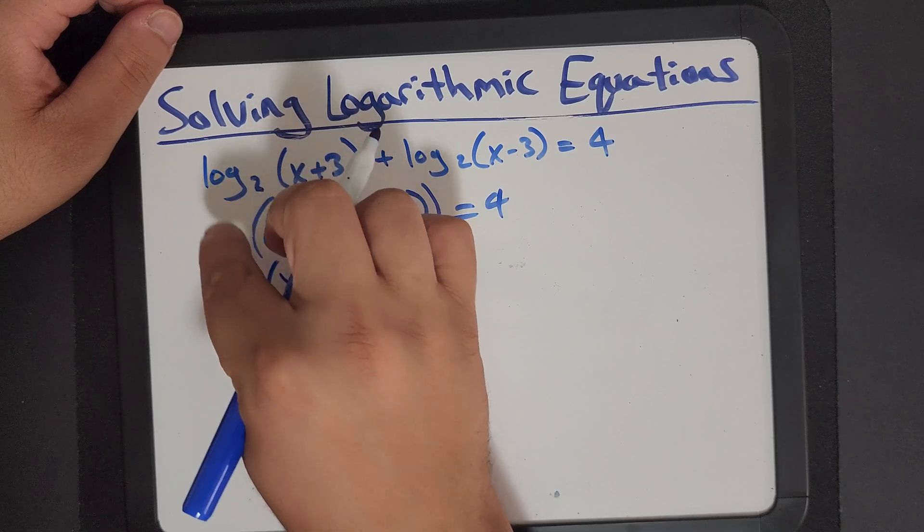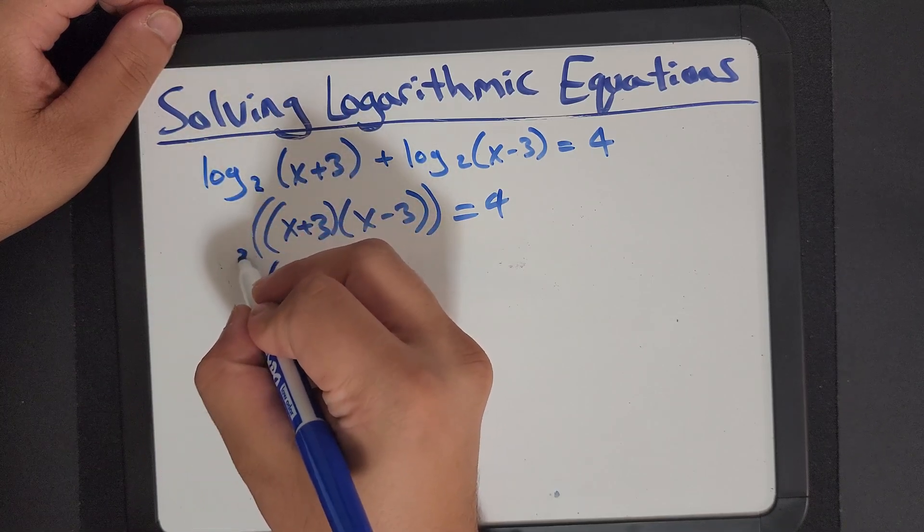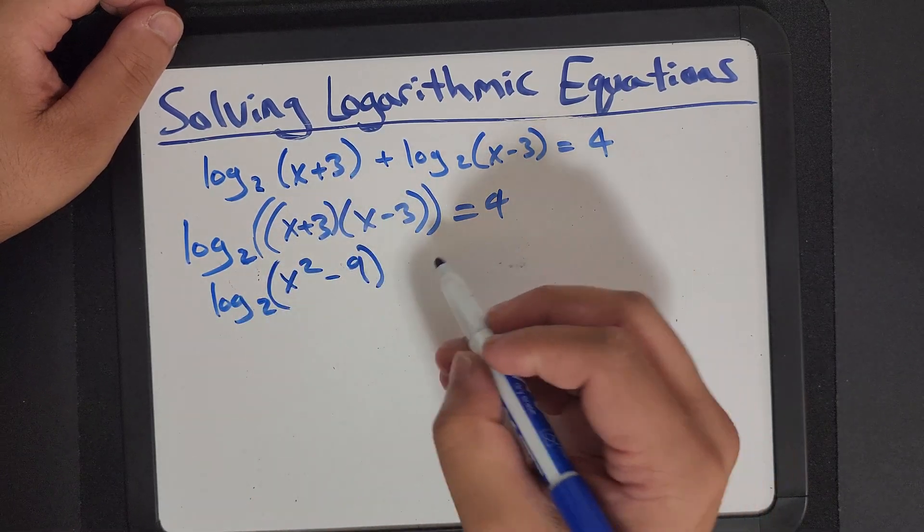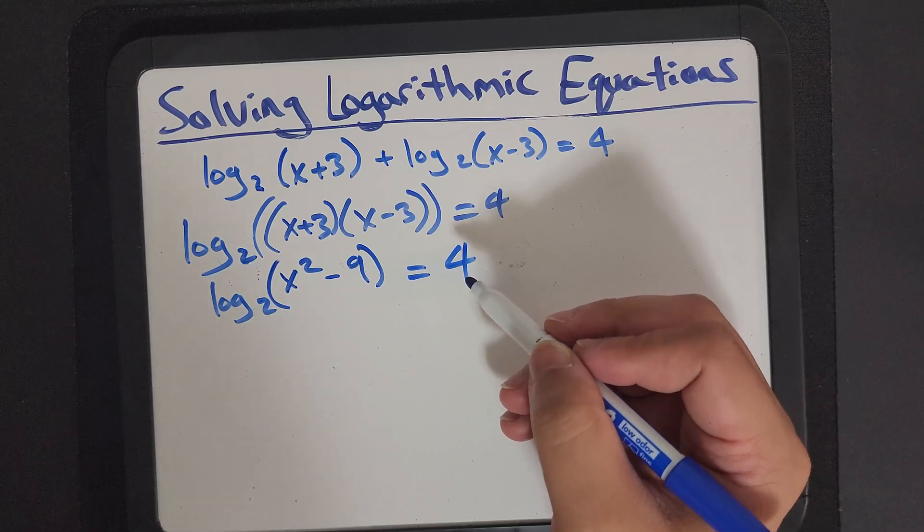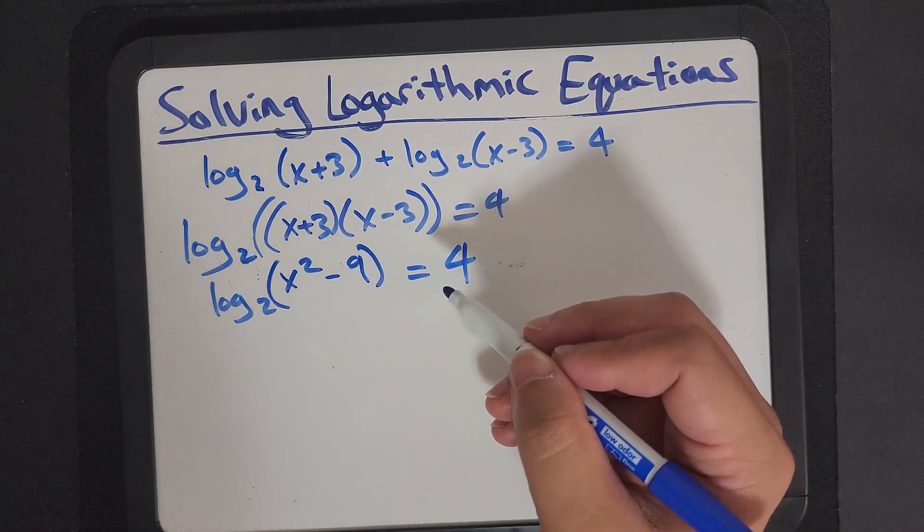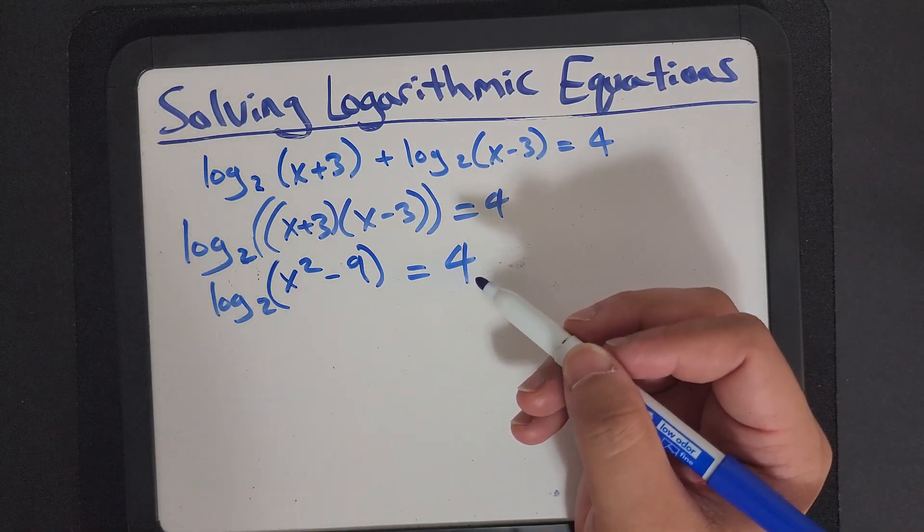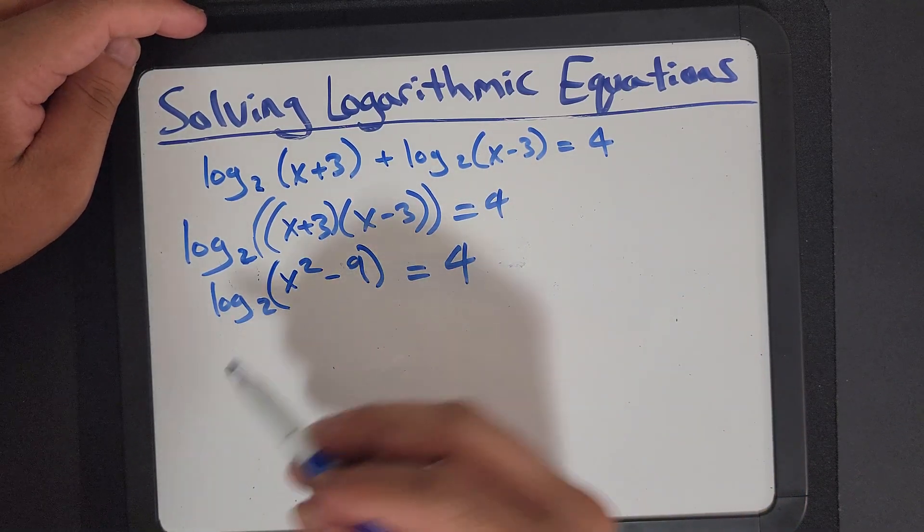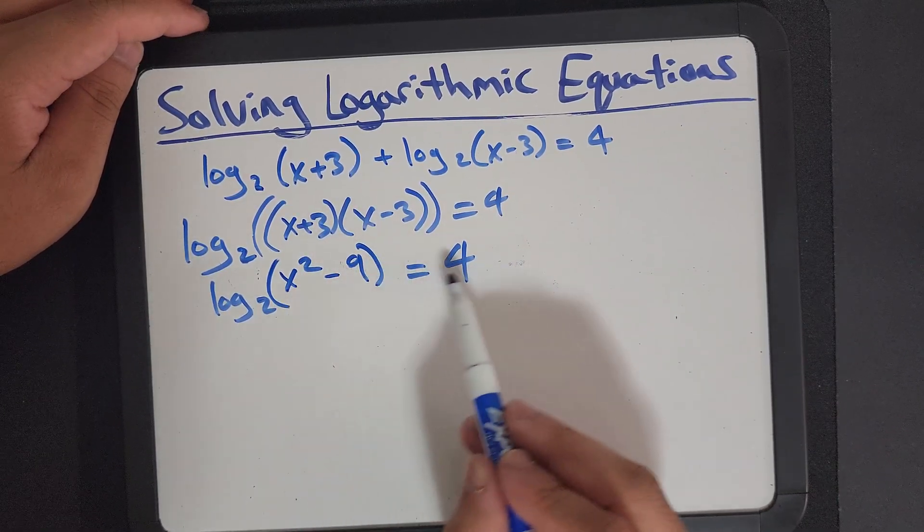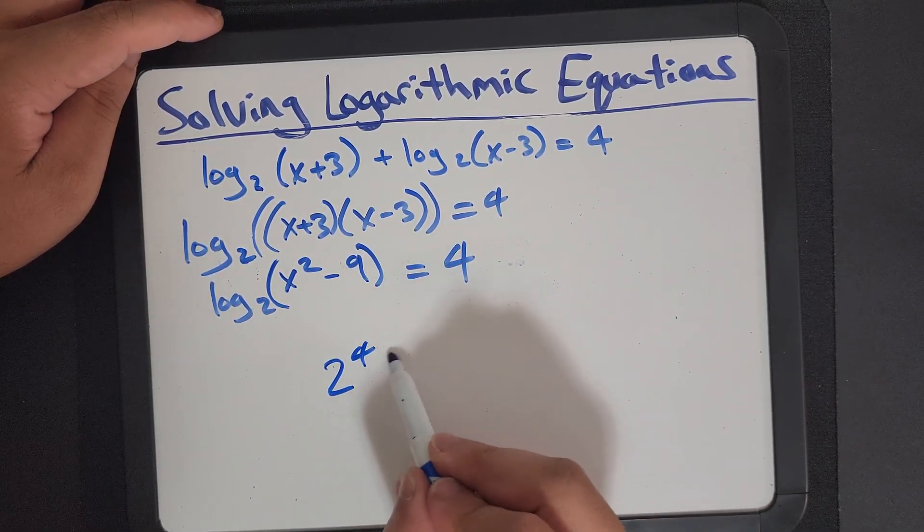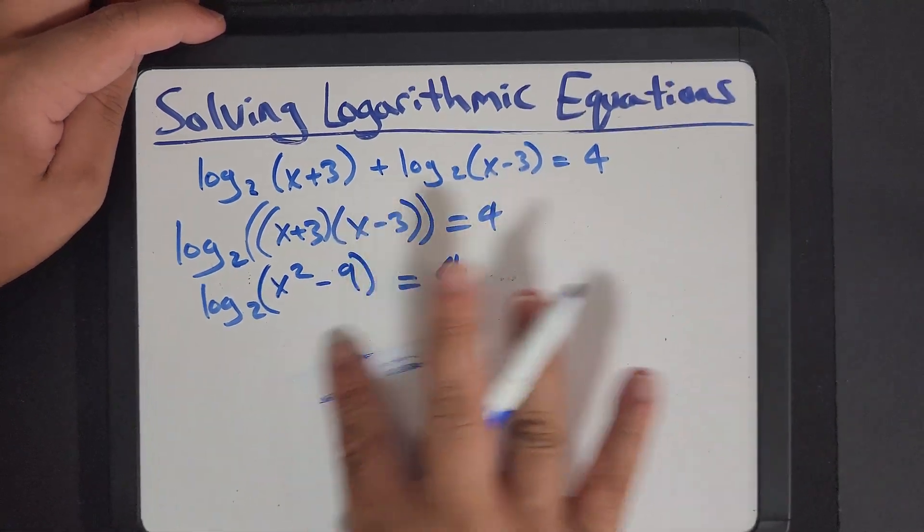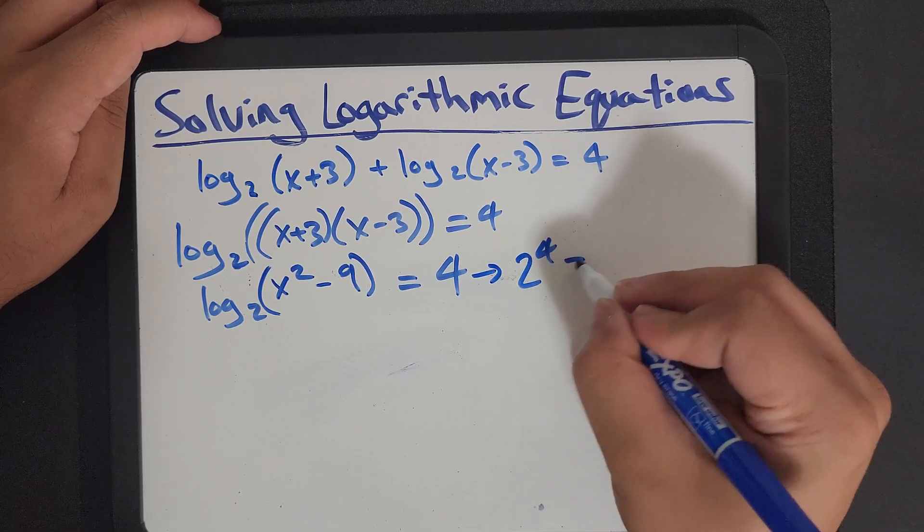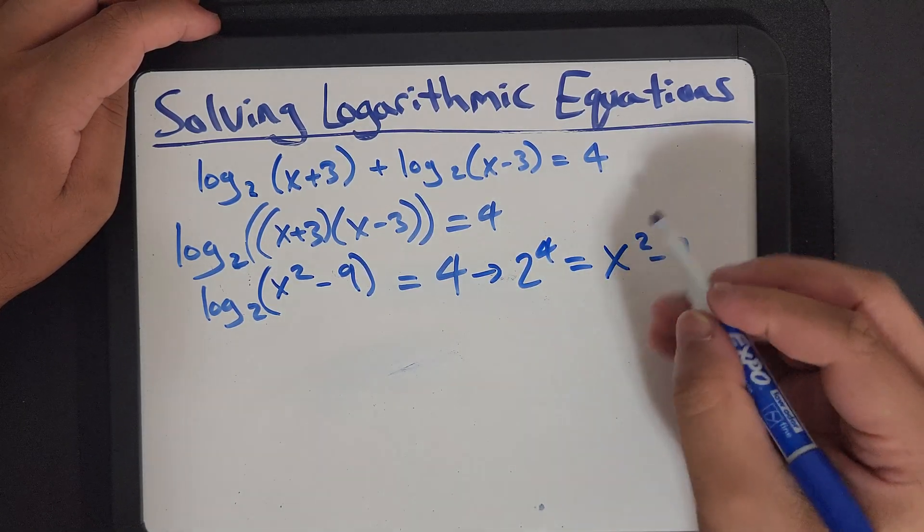Oh, I forgot to write my base. And there. Now that we're here, we can write, um, we can convert this equation into an exponent form. 2 to the power of 4 is equal to that. Let me write a little more up. 2 to the 4 is equal to x squared minus 9.